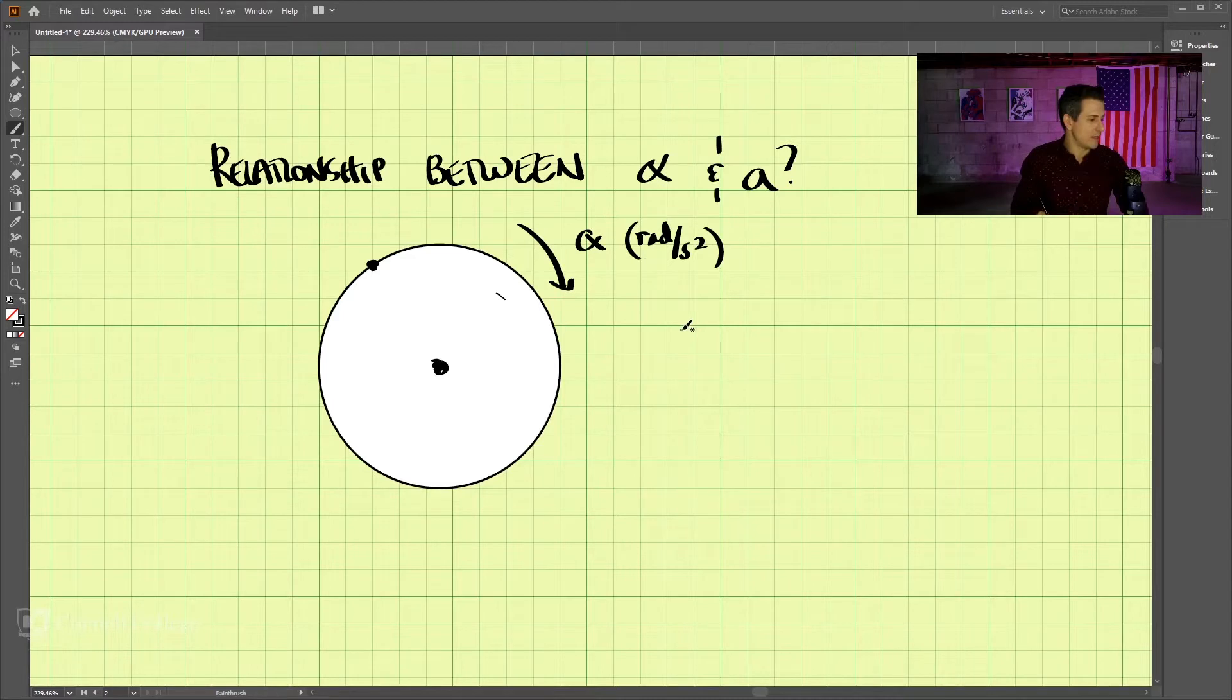Let's take a look at the tangential acceleration first. The tangential acceleration, which will be tangent to this disc here, is equal to alpha times r, where r is the distance from the rotating axis.